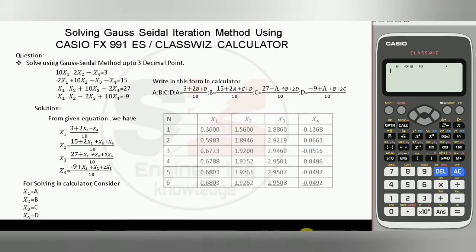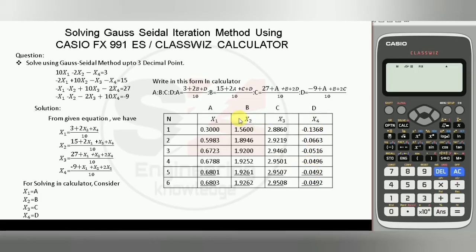After this, we have to draw a table in our notebook. The first column will contain the number of iterations, and the second, third, fourth, and fifth columns will contain the values of the variables. The value obtained from variable a in the calculator will be the value of x1, and similarly b, c, and d will denote the values of x2, x3, and x4.